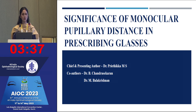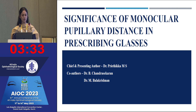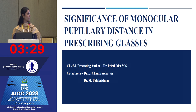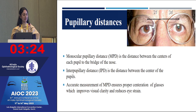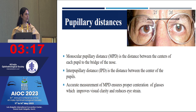Good morning to one and all present here. My topic is on the significance of monocular pupillary distance in prescribing glasses. Monocular pupillary distance is the distance between the centers of each pupil to the bridge of the nose, whereas interpupillary distance is the distance between the center of both pupils.